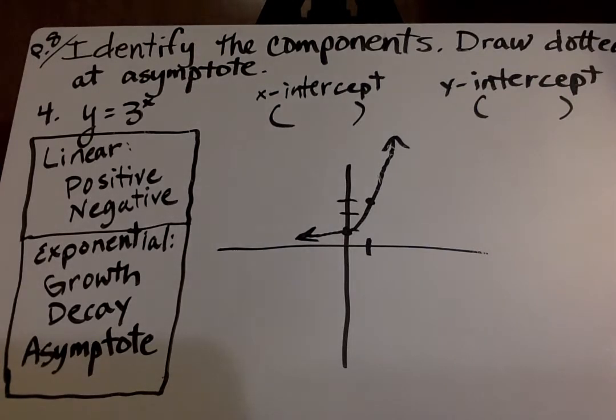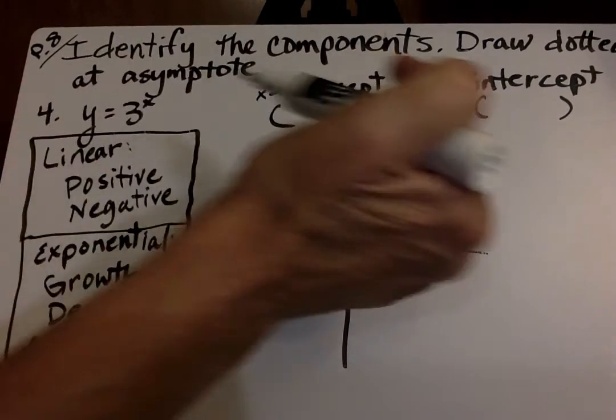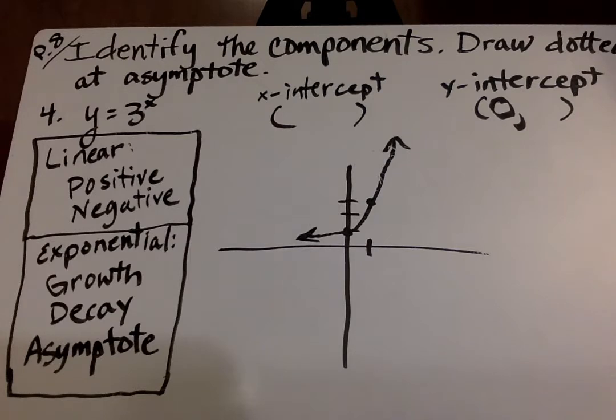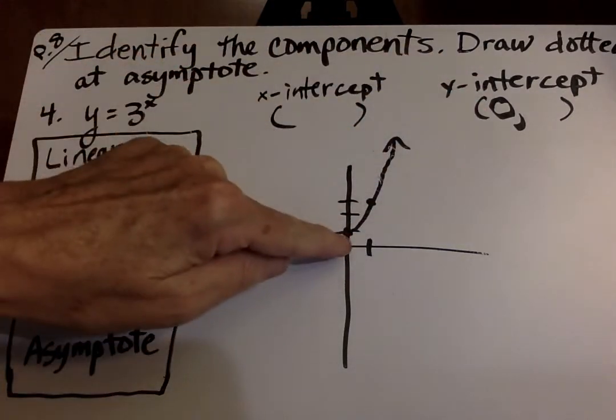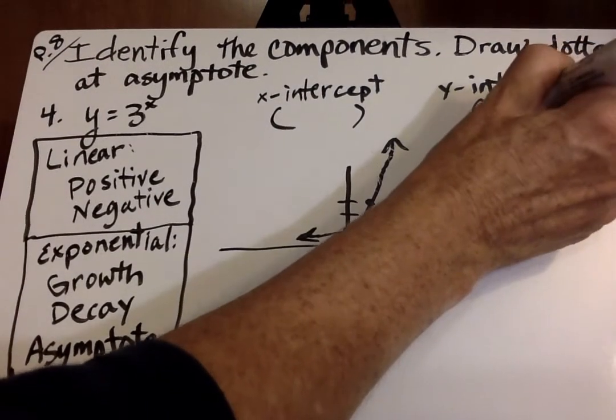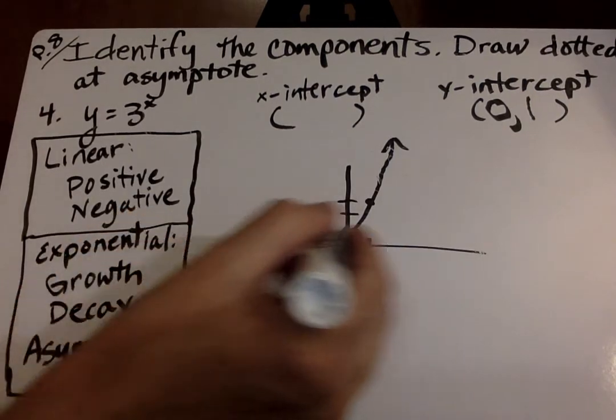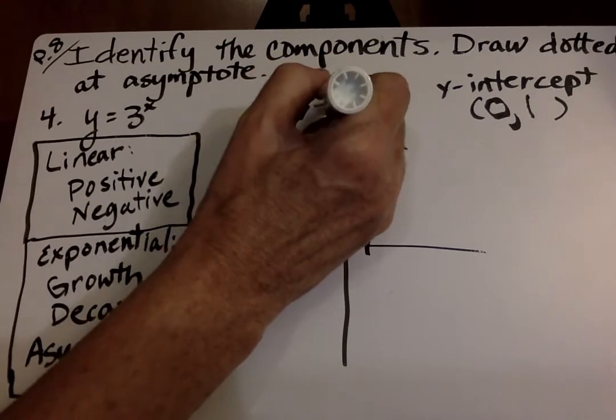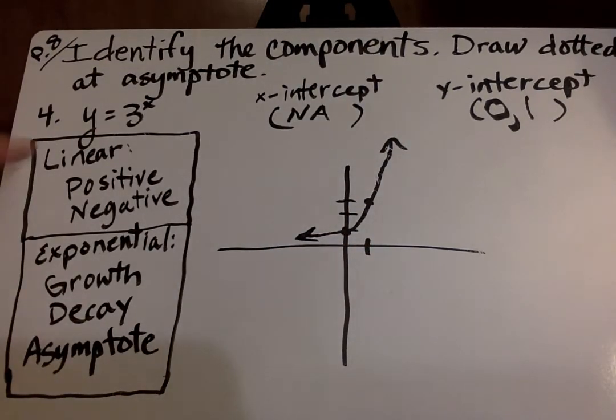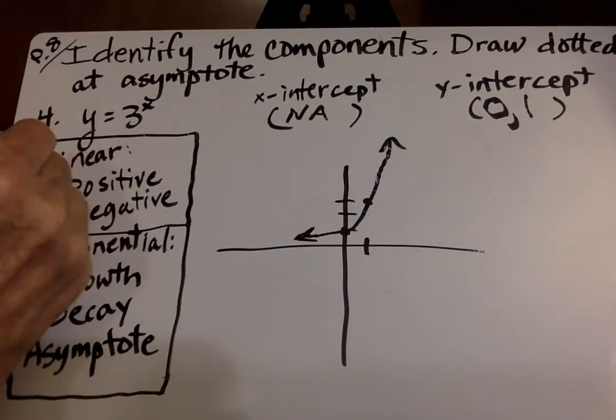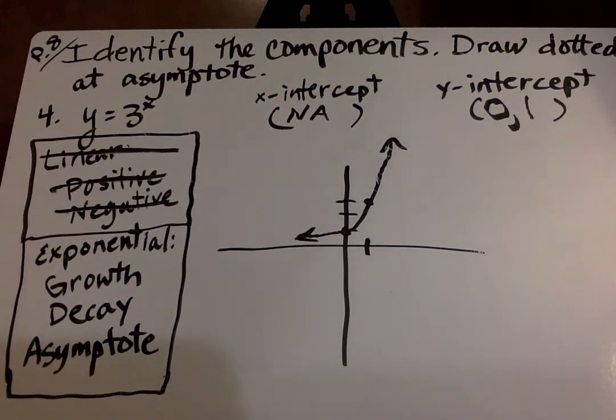This is on page 8. Identify the components. Draw a dotted line at asymptote. Y equals 3 to the x power. So to find out the y-intercept, that's easier. We put a 0 in for x and see what comes out for y. Or if they have a graph drawn for us on page 8, we can simply look at the graph. Where does it cross on the y-axis? Right here at 0, 1. And 3 to the 0 power is 1. So that is our y-intercept. Next for our x-intercept, where does it cross? This line right here. And it actually never crosses there. So if there's no intercept, we put in n/a for does not apply. Now we also look at this left side and say, is it linear? Is that a straight line? No, it is not. Is it exponential? Yes. If you see some kind of curve going up, it's exponential.